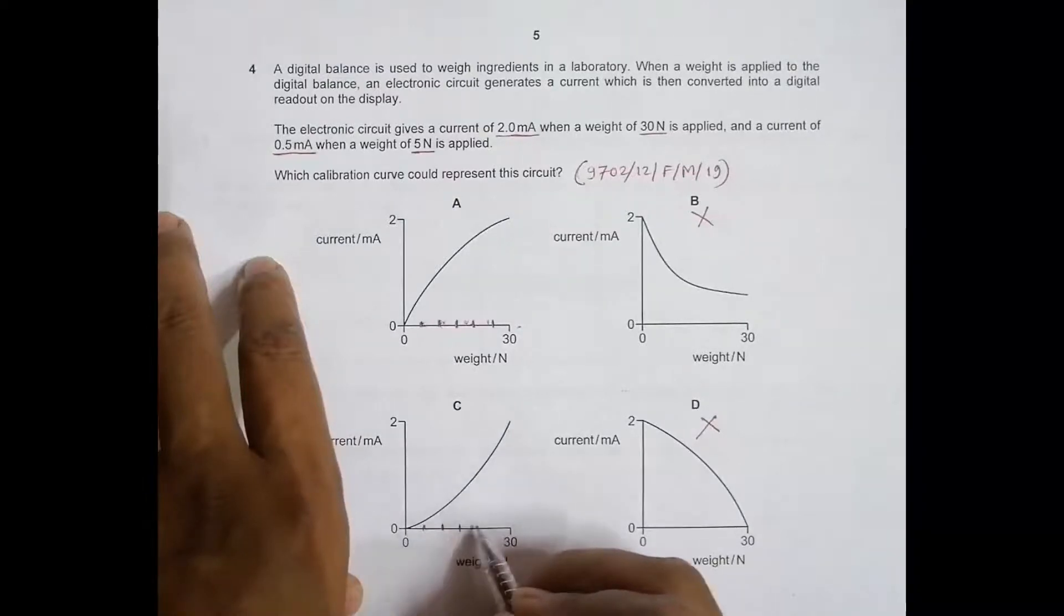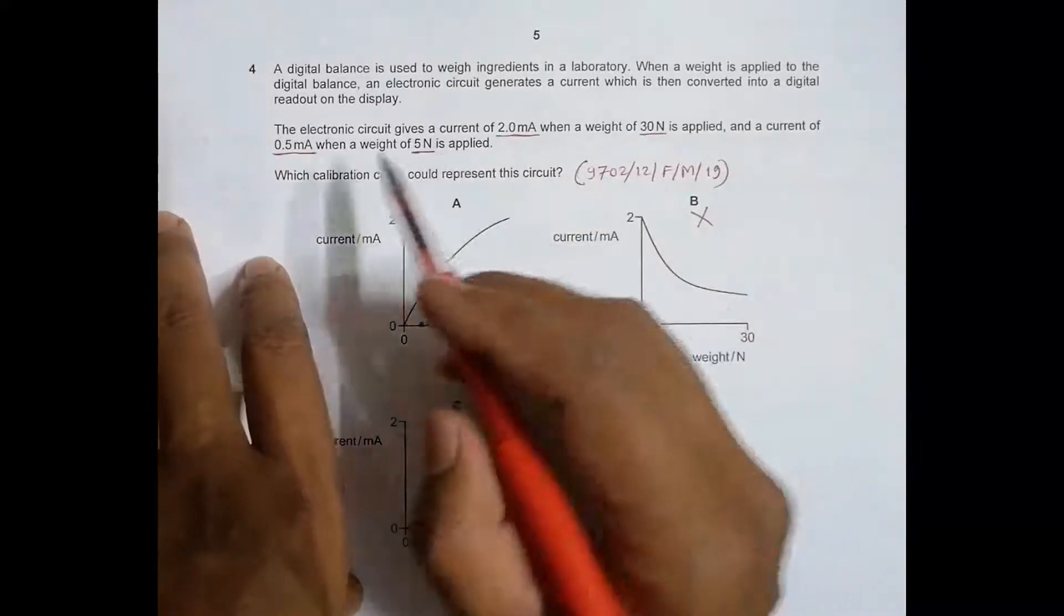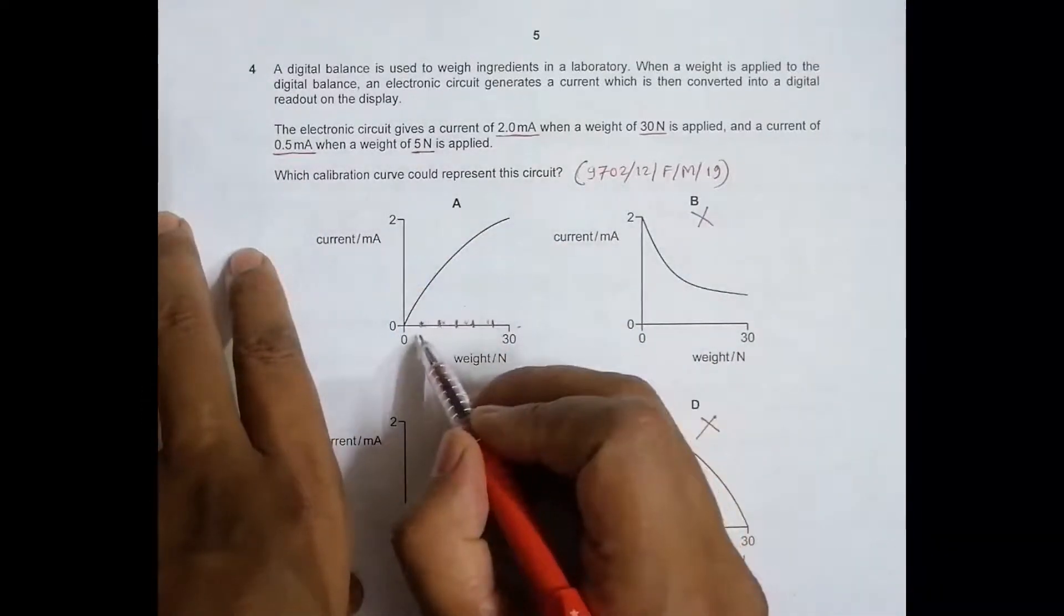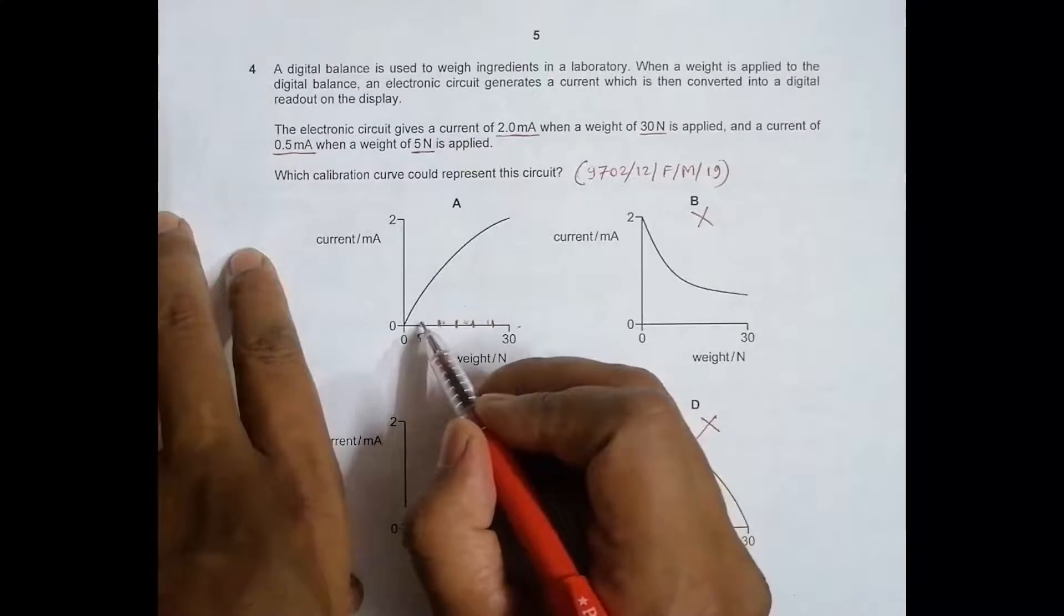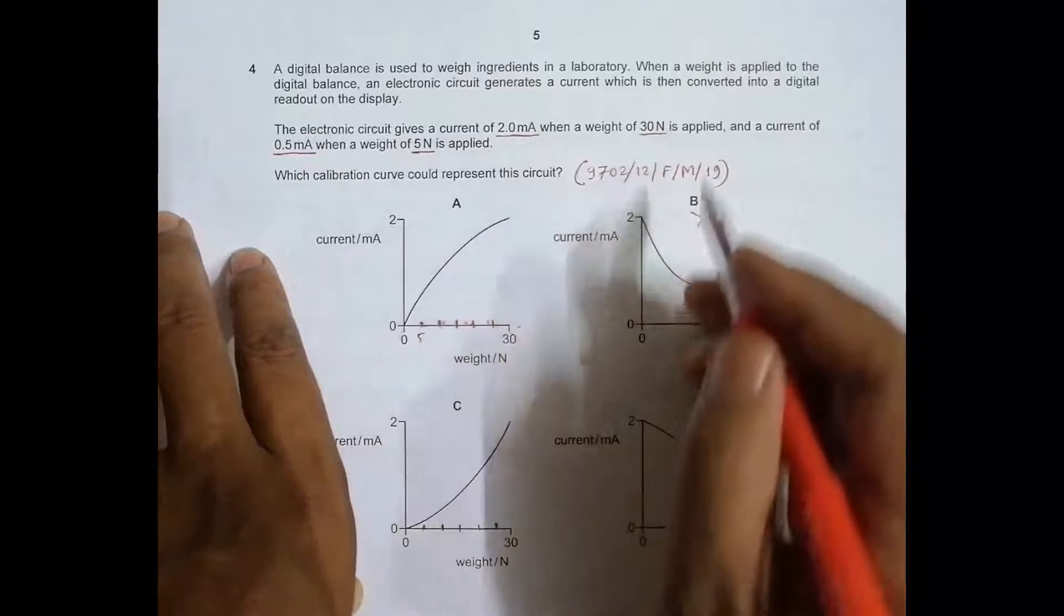Here also we can mark: 5, 10, 15, 20, 25, and 30. What it says is at 5 Newtons the current should be 0.5 milliampere.